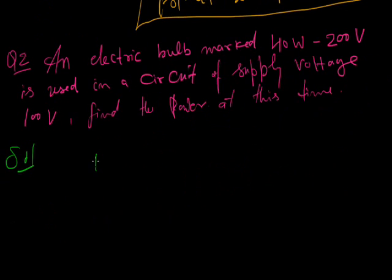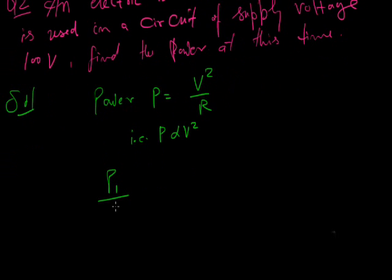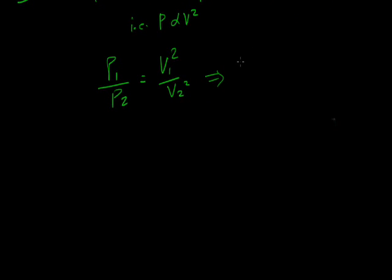We know that power is equal to V square upon R. That is P is proportional to V square. So P1 upon P2 is equal to V1 square upon V2 square. The initial power is given, power is marked 40, P2 to be found. The voltage marked 200 and operated voltage is 100.